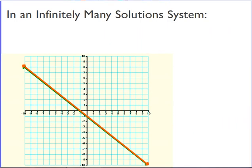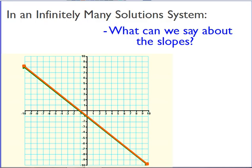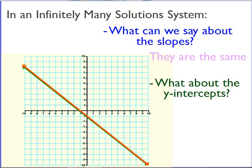How about in an infinitely many solution system? Here there's one line that basically lies on top. So in an infinitely many solution system, what can we say about their slopes? Well, since they're the same line, they're obviously going to have the same slope. And how about the y-intercepts? Because they are exactly the same line, their intercepts are going to be the same too. So slopes are the same, intercepts are the same in an infinitely many solution system.